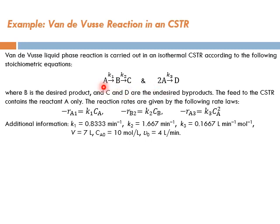A goes to B, and A also goes to D, so there's competition. This is a complex reaction because it involves reactions in series and reactions in parallel. B is the desired product, and C and D are the undesired byproducts. The feed to the CSTR contains the reactant A only.